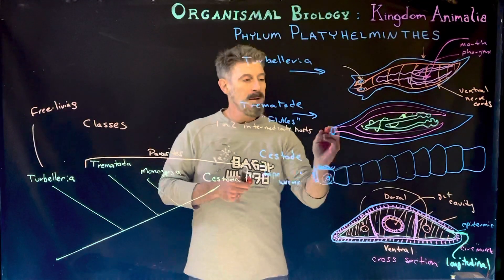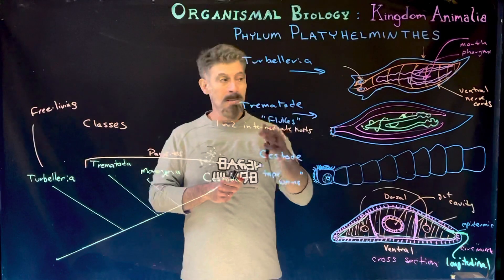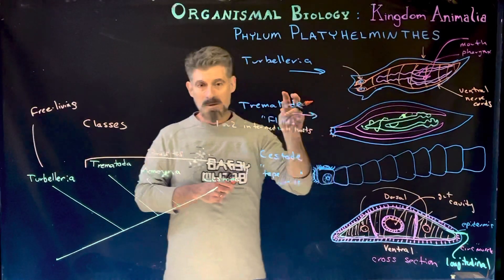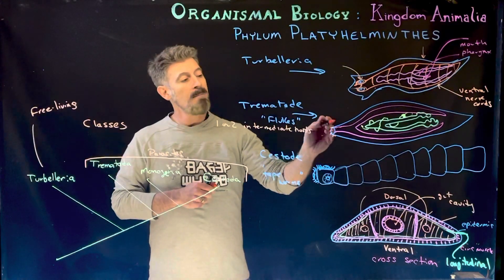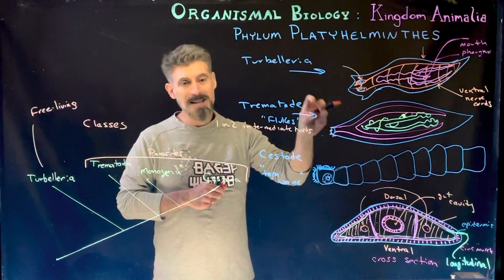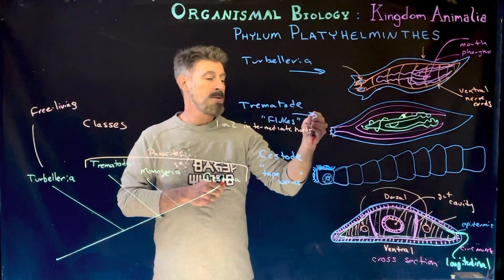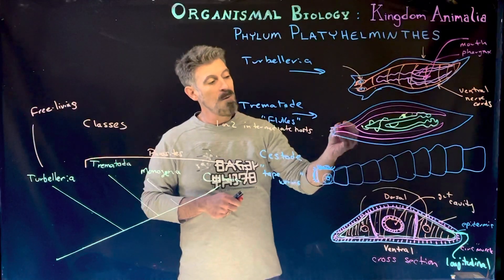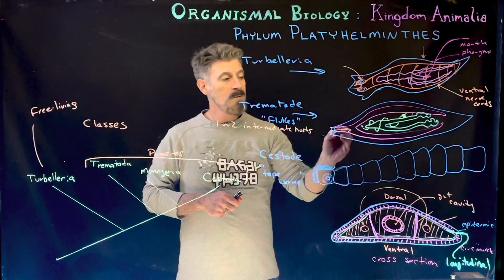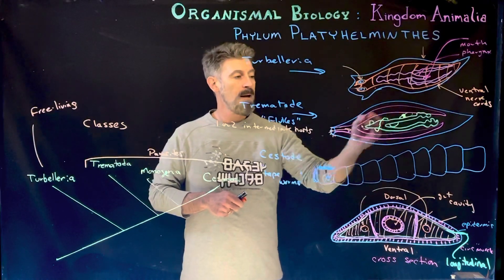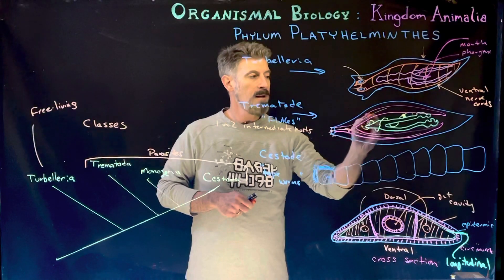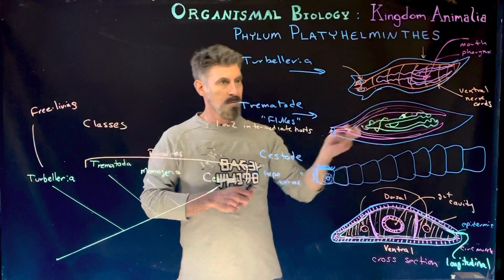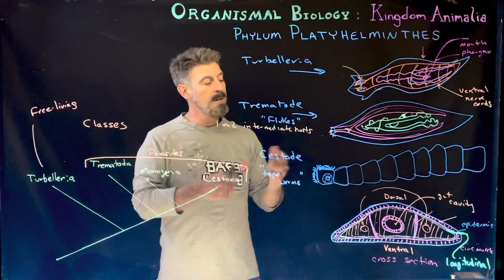Trematodes have an anterior mouth — different from the Turbellarian placement — and often have rasping, hair-like tooth structures they use to damage host tissue, causing bleeding and fluid release which they then ingest into their digestive tract. This is typically an incomplete digestive system. They also have protonephridia for waste removal.